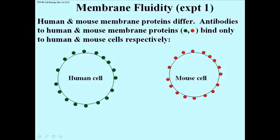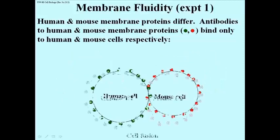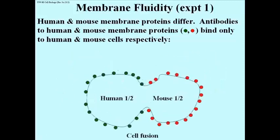This is an experiment where a human and a mouse cell can be fused. Because the mouse and the human cell have different membrane proteins, it is possible through the techniques described here, after the fusion, to watch the proteins of the mouse cell move into the region of the human cell membrane, and vice versa.